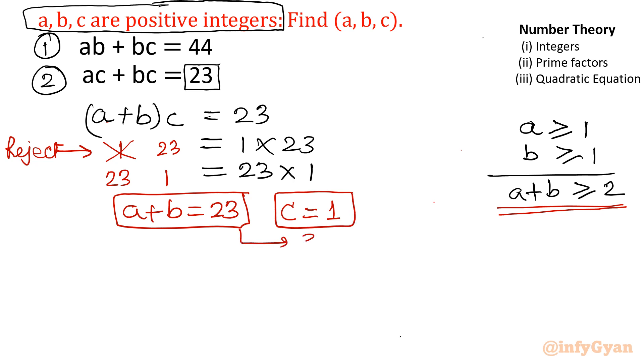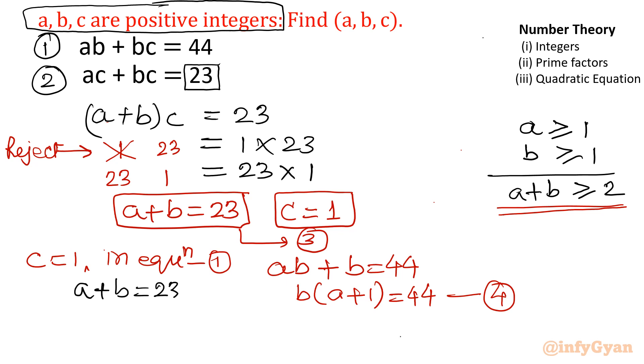So this equation we will call equation number 3. Put c equal to 1 in equation 1. So if I put c equal to 1, equation will be ab plus b equal to 44. Take b common: b(a plus 1) equal to 44. Let us call this equation number 4. Now what I am going to do? I will calculate a from equation 3. A plus b equal to 23, so a will be equal to 23 minus b. This substitution I am going to use here.